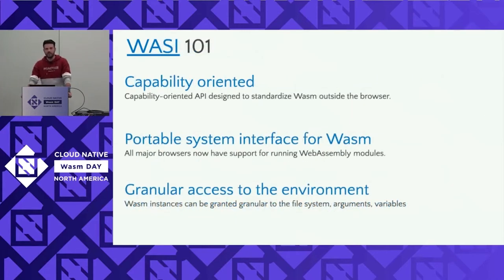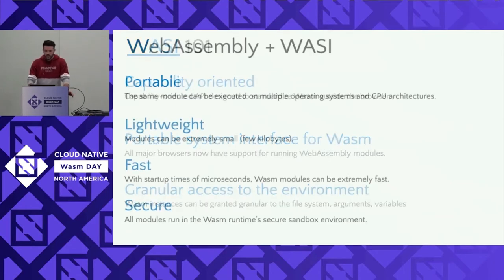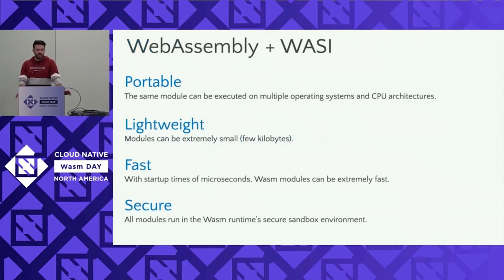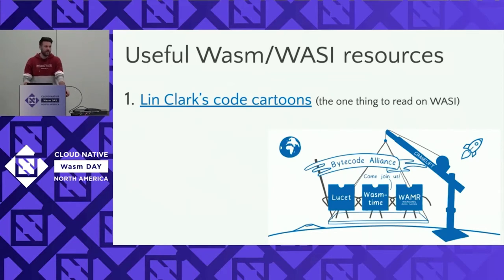On top of WebAssembly, there's no mention necessarily of the web. You can run WebAssembly outside the browser pretty well, and that's where WASI comes in. It's a capability-oriented API, essentially designed to standardize the execution of WebAssembly outside the browser. What WebAssembly and WASI give us outside the web is a portable, lightweight, fast, and secure way of executing semi-trusted or untrusted code. If you're getting started with WASI, you have to read Lynn Clark's code cartoons — they're probably the best resource for anyone getting into WebAssembly and WASI.